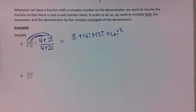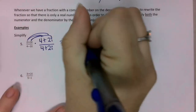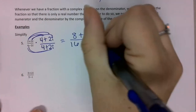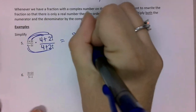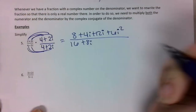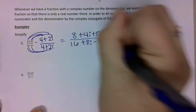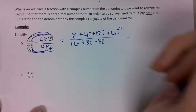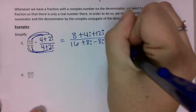Then I want to do the same thing to the denominator. 4 times 4 is 16, 4 times 2i is 8i, negative 2i times 4 is negative 8i, and negative 2i times 2i is negative 4i squared.